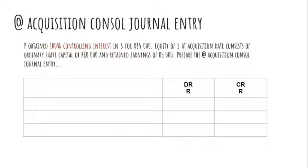An important part of the work covered in chapters two and three is around being able to do the at acquisition consolidation journal entry. I'm now going to do a few examples including amounts that are different from what's in the textbook, and I'll use these to illustrate some of the principles.